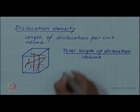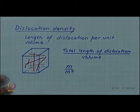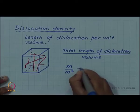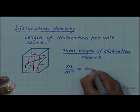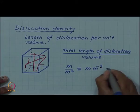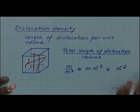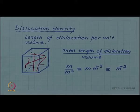Its unit of course will be meter divided by meter cube. Sometimes it is written as meter per meter cube or sometimes even simply as per meter square, cancelling one meter from numerator and denominator.